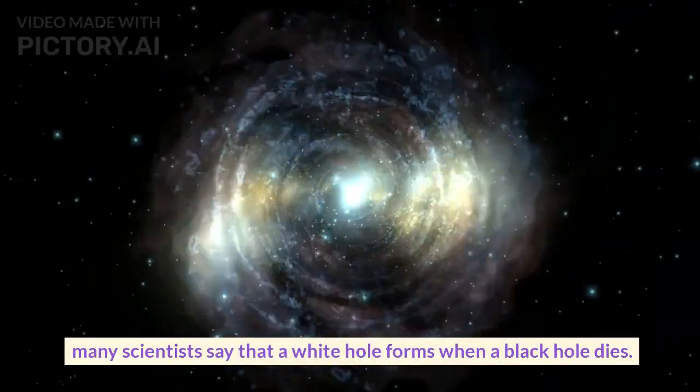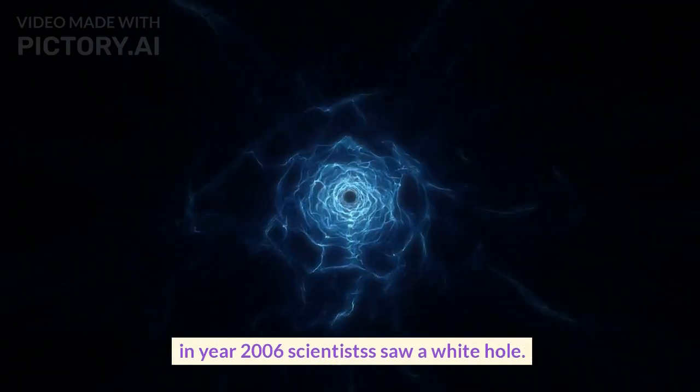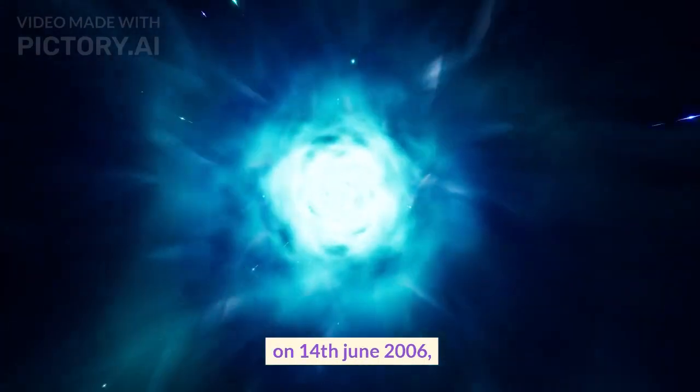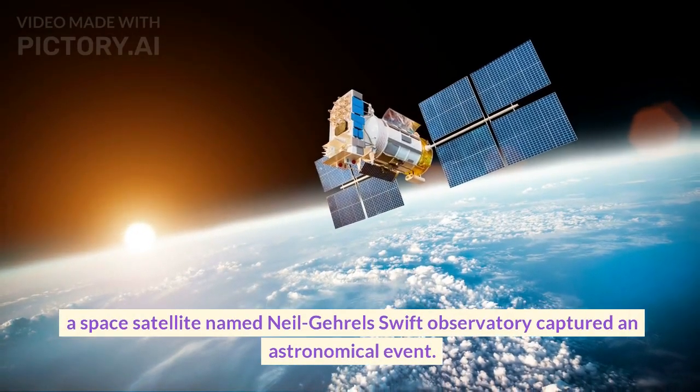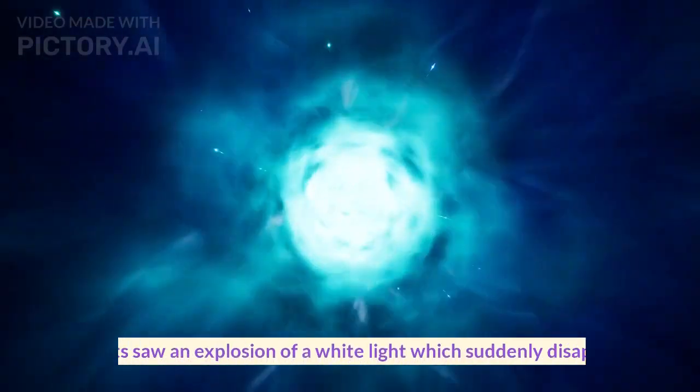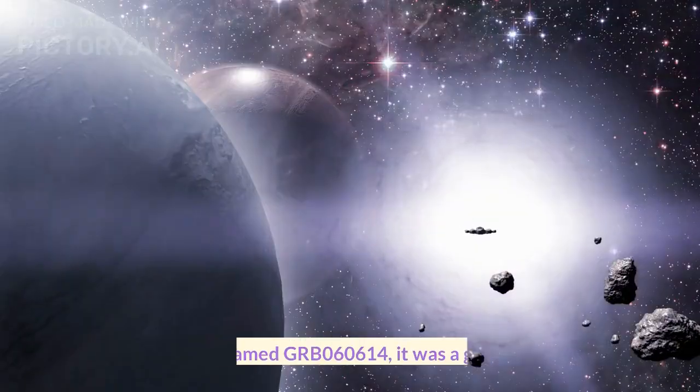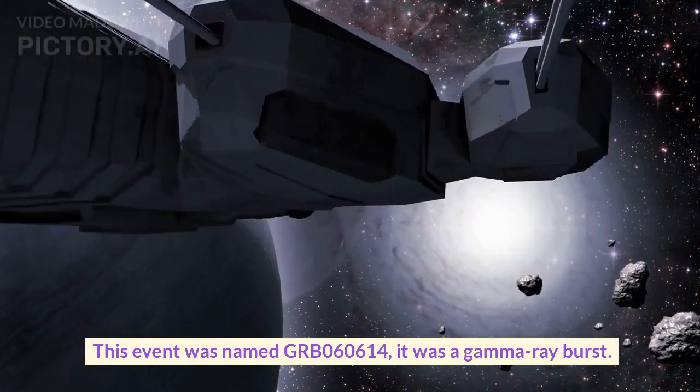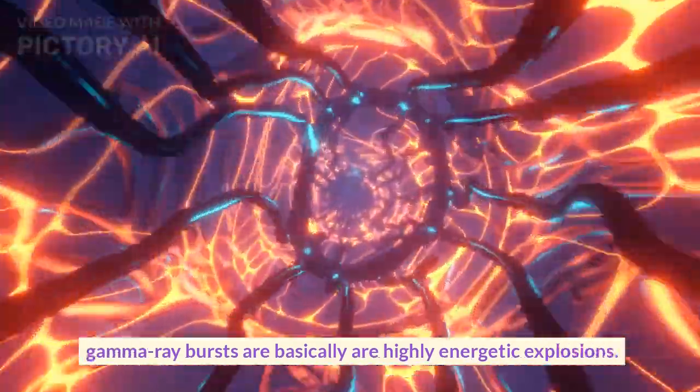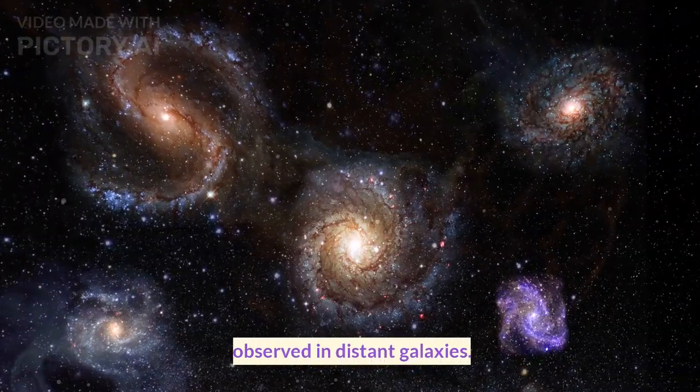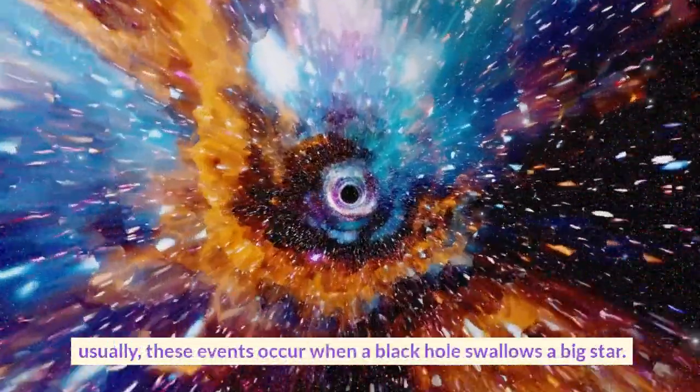In year 2006, scientists saw a white hole. On 14th of June 2006, a space satellite named Neil Gehrels Swift Observatory captured an astronomical event. Scientists saw an explosion of a white light which suddenly disappeared. This event was named GRB 060614—it was a gamma ray burst. Gamma ray bursts are basically highly energetic explosions observed in distant galaxies. Usually these events occur when a black hole swallows a big star.